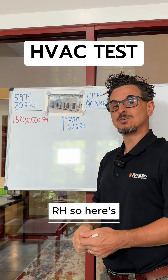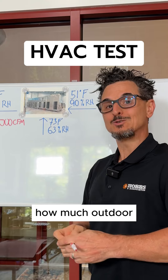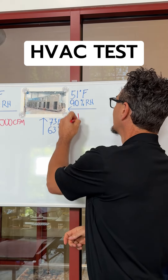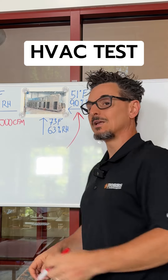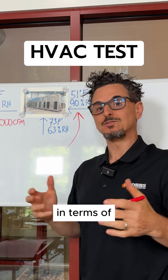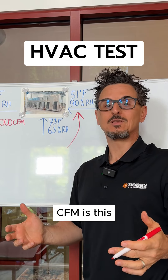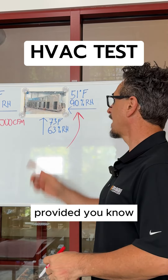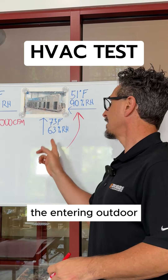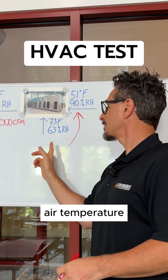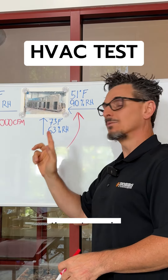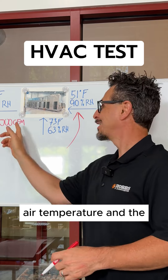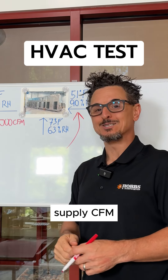So here's the question: how much outdoor air in terms of CFM is this unit bringing in, provided you know the entering outdoor air temperature, the return air temperature, the supply air temperature, and the supply CFM?